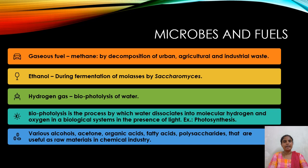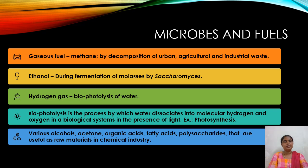Microbes are used in producing fuels. The gaseous fuel methane can be obtained by anaerobic decomposition — that is, decomposition of materials in the absence of oxygen. Through anaerobic decomposition of urban, agricultural, and industrial waste, we can obtain methane gas. Ethanol is an alcohol which is a clean fuel — it burns without smoke and burns completely. This ethanol is obtained by the fermentation of molasses by the yeast Saccharomyces.